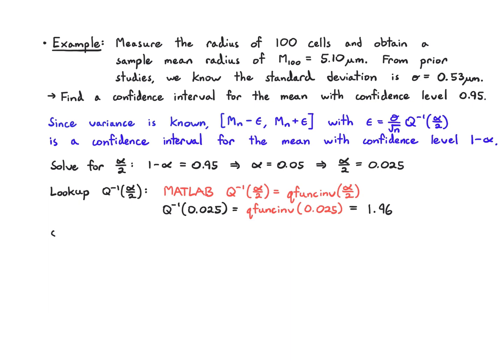Throughout this video, I'm more or less writing things with two decimal places just as a convention, but you could do it however you feel comfortable. So you're going to solve for epsilon, which is just multiplying the standard deviation, dividing by root 100 and times 1.96, and you get 0.1 microns.